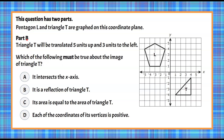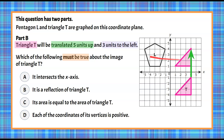Welcome back. In Part B we have triangle T that's being translated five units up and three units to the left, and we need to determine which of the statements must be true. We're going to look at triangle T on our coordinate plane. The first thing we do is translate every vertex five units up — one, two, three, four, five — and draw the new triangle. Each vertex moves five units upward.